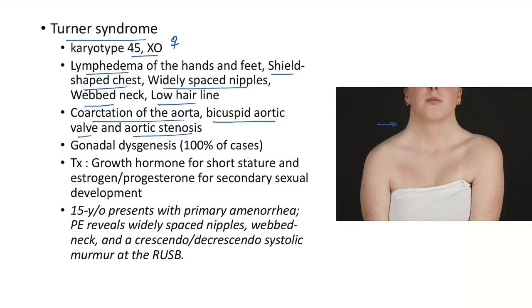There will be gonadal dysgenesis in 100% of cases of Turner syndrome. Treatment: growth hormone should be given for short stature, and estrogen and progesterone should be given for secondary sexual development.